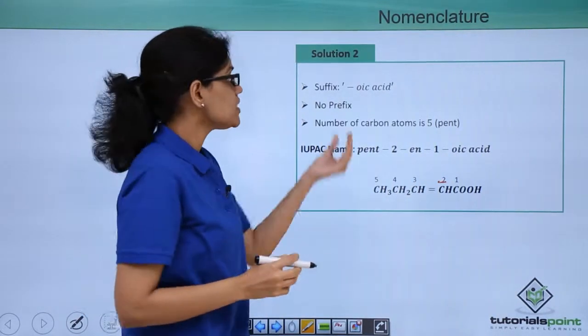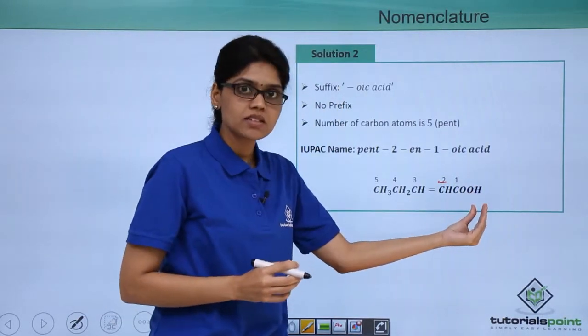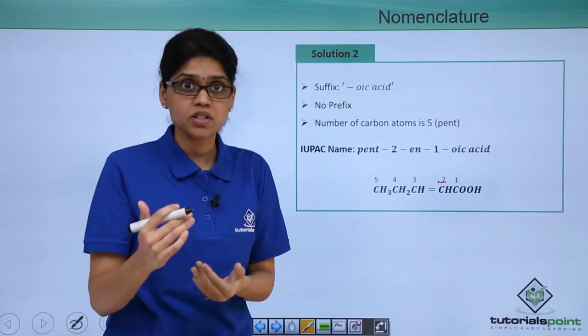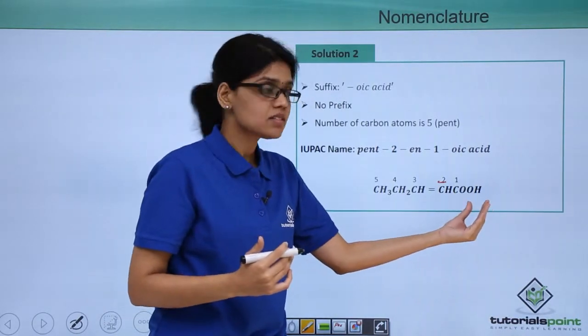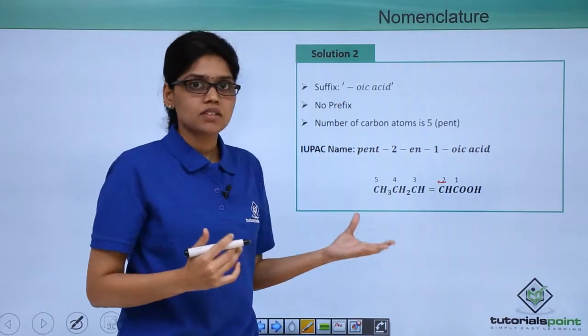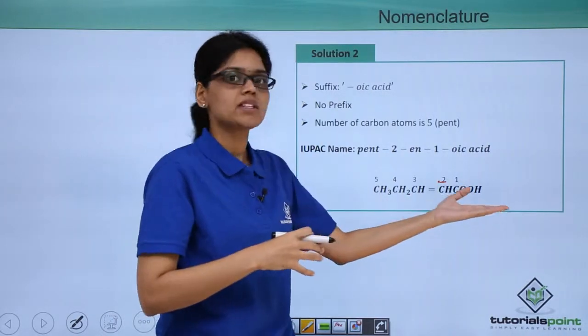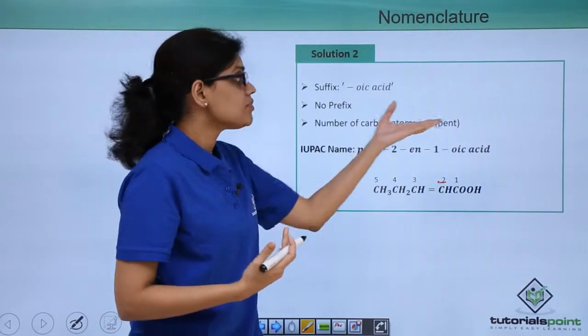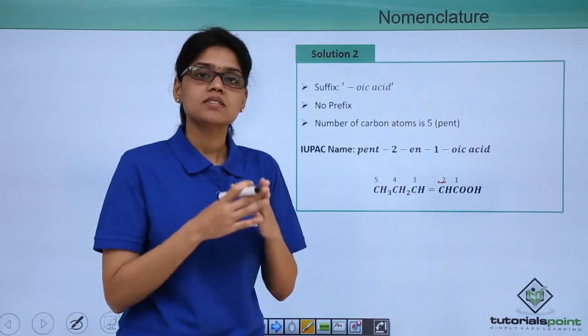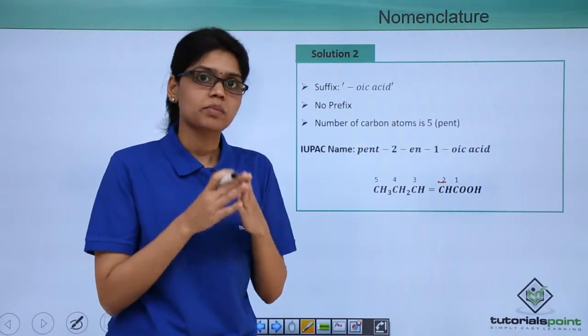Now we can see that suffix is nothing but oic acid, because suffix comes from your principal functional group which is a carboxylic acid, and there is no prefix in this because there are no substituents or any other group attached to the main chain. How many carbon atoms are there? There are 5 carbon atoms, that means the system would be pent or the prefix would be pent.